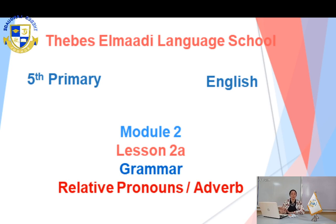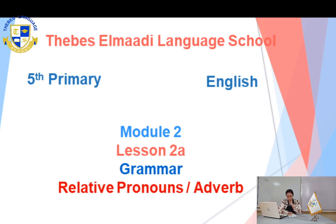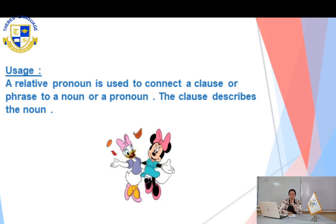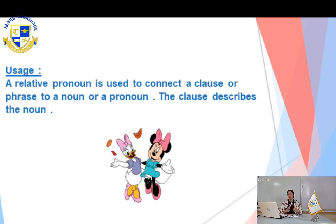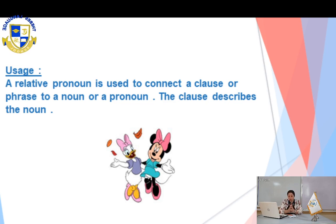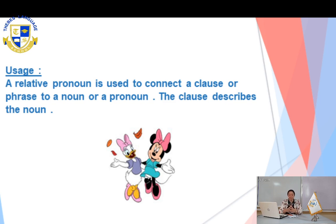Now, before we start, I want to ask you: what are the relative pronouns and how can we use them? Let's move to slide number two. A relative pronoun is used to connect a clause or a phrase — which means a sentence — to a noun or to a pronoun. That clause, which is called the relative clause, describes the noun. The relative pronouns are very important connectors in the sentence. We use them in order to connect two sentences together and connect a noun with a relative clause that gives more information or describes the noun. The relative pronouns are usually located after the noun, so that makes it clear which person, place, or thing we referred to.